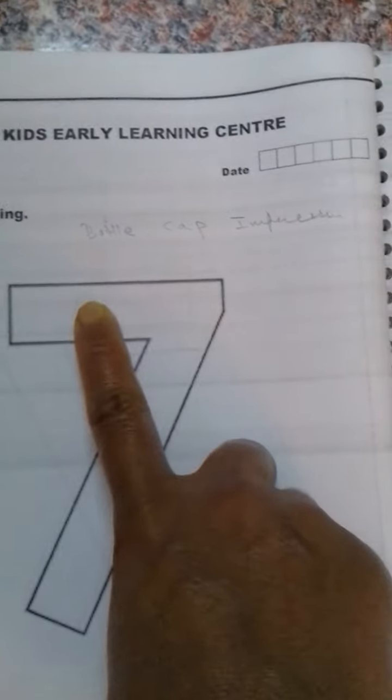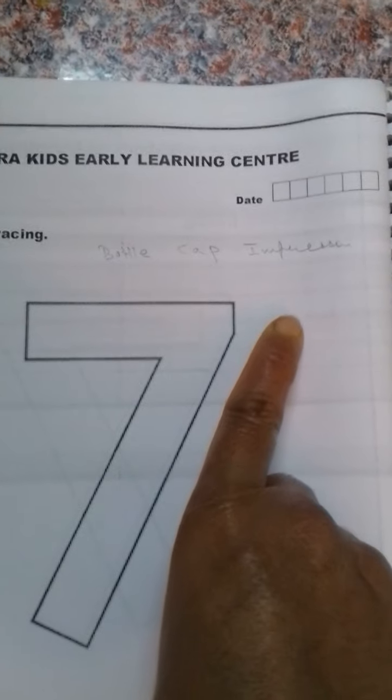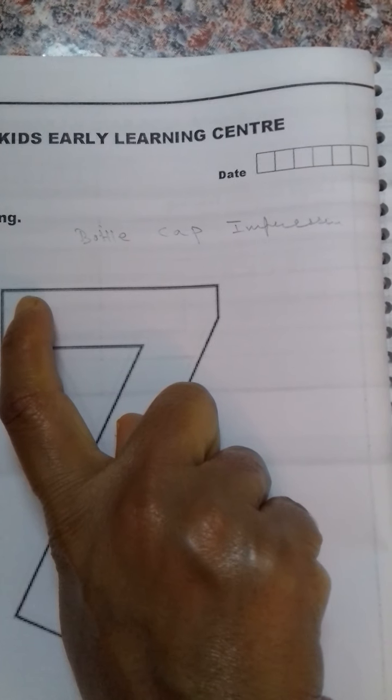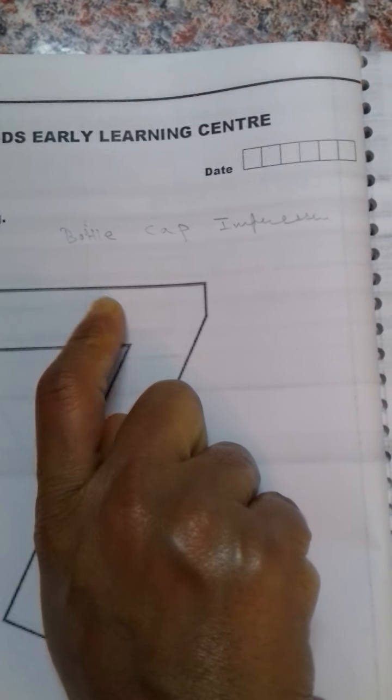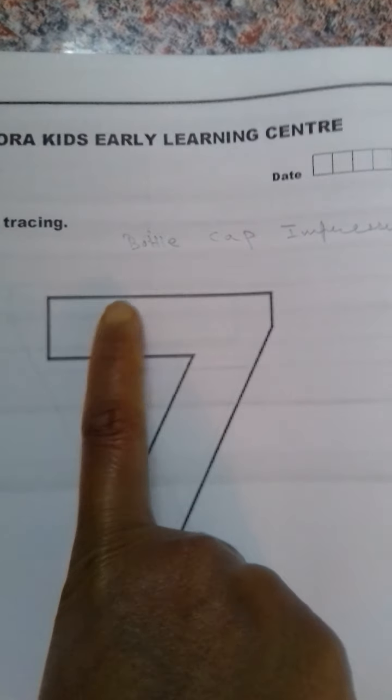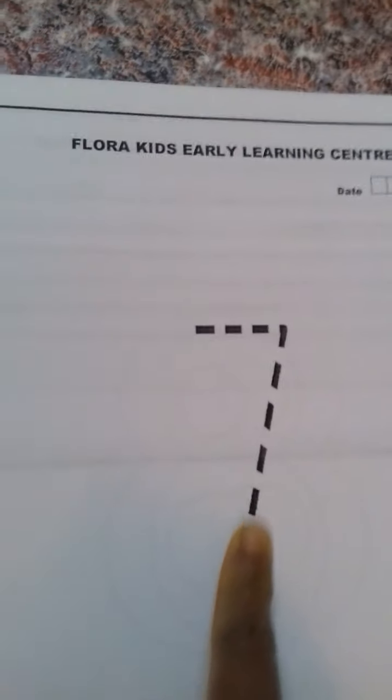Then you can give bottle cup impressions with small bottle cups. You can dip the bottle cups or cap in watercolours and ask the child to keep or make impressions on number seven. Then comes again finger tracing.